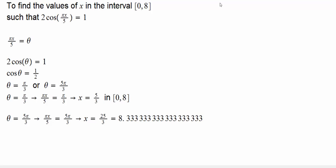And of course, if you look at the period of cosine of pi x over 5, that period is 10. So, here, these are the two values that we have. Anyways, our interval of interest was 0, 8, and 5 over 3 is the only value that belongs in there.